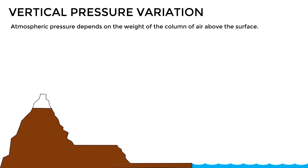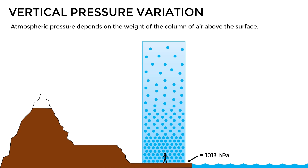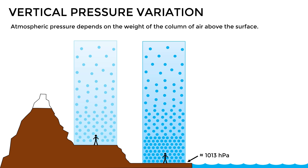Let's start by analyzing the case of vertical pressure variation. As we already said in the previous video, atmospheric pressure depends on the weight of the column of air above the surface, or in other words, how much air is above us. If we are at sea level, we will have a large amount of air above us exerting pressure, since the air column is quite high. The atmospheric pressure at sea level is around 1013 hectopascals. But if we start going up in the atmosphere and get to a higher altitude, we can see that there is now less air above us, which means the atmospheric pressure here will be lower — around 850 hectopascals.